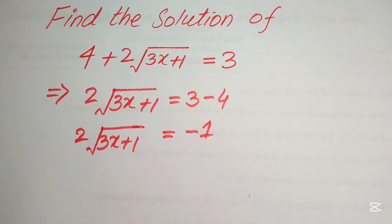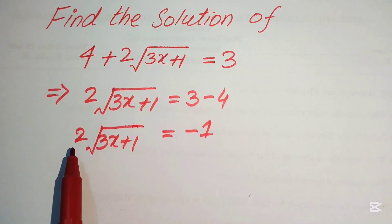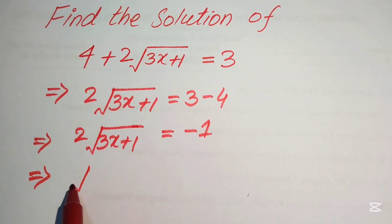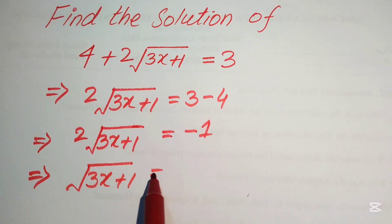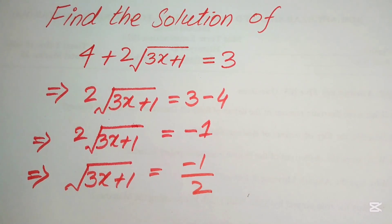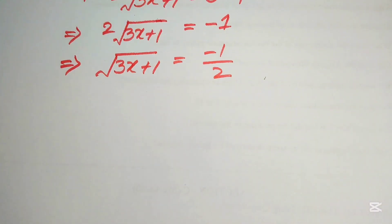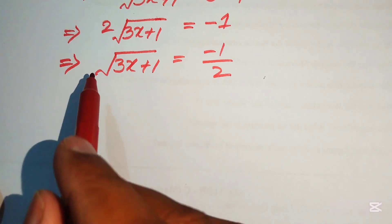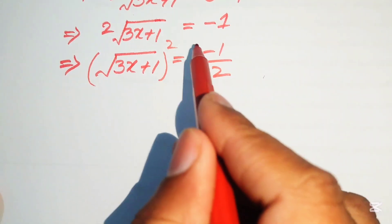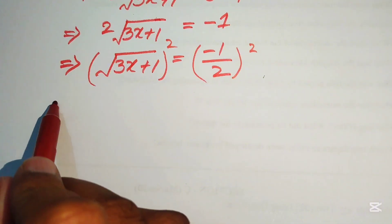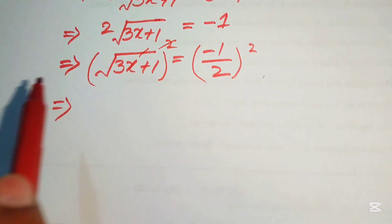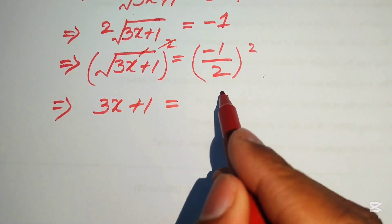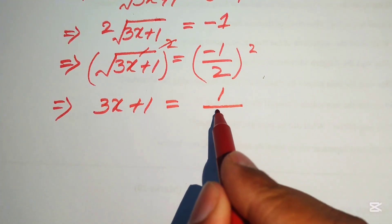In the traditional way of solving the equation, we need to move this 2 to the right hand side, so it will be written as square root of 3x plus 1 equals to minus 1 over 2. Now we need to remove the radical sign on the left hand side, so we take the squaring on both sides of this equation. When you take the squaring on both sides, the square root is cancelled and we get 3x plus 1 equals to minus 1 squared over 2 squared, which gives plus 1 over 4.